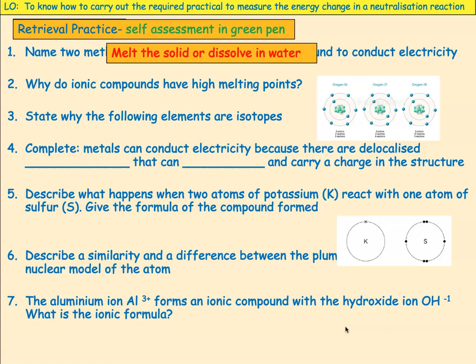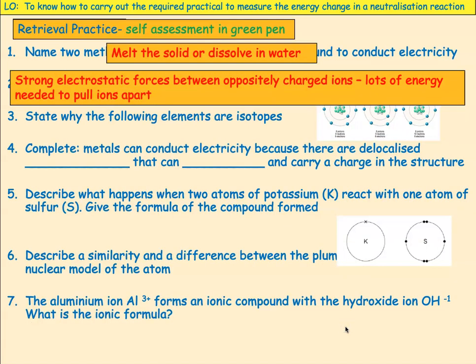Why do ionic compounds have high melting points? They have high melting points because they have strong electrostatic forces between oppositely charged ions, so it requires a lot of energy needed to pull the ions apart.